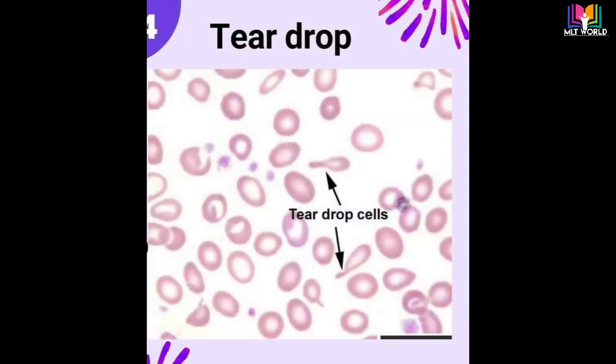Next is tear drop cells. As we can see, they are tear-shaped, that's why these cells are called tear drop cells. The presence of tear drop cells may indicate anemia caused by bone marrow not producing normal cells due to toxins or tumor cells, and cancer in the bone marrow. Myelofibrosis or severe iron deficiency anemia also indicates conditions where we will see tear drop cells in RBC morphology.